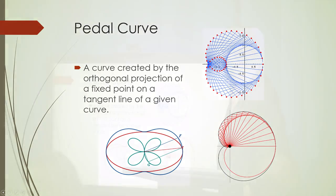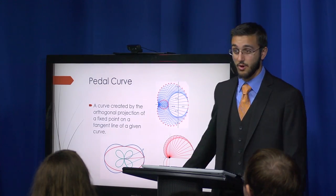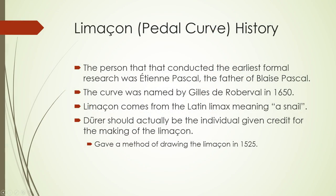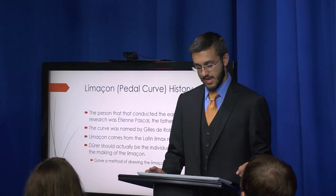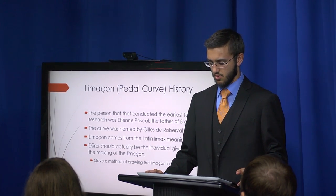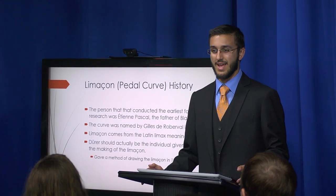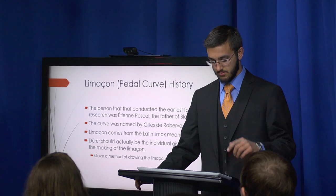Here are a few examples. The two main ones we'll be focusing on are these two. One of them is a cardioid. Some history about the limaçon: the person that conducted the earliest formal research was Blaise Pascal's son, which is very interesting — math must run in the family. The curve was named by Gilles de Roberval in 1650. This curve comes from a Latin name that means snail because of its spiral shape.